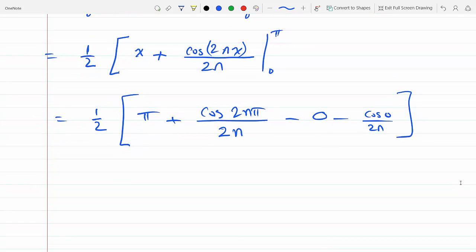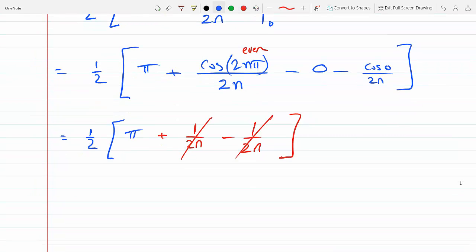And pi—this is pi plus cosine(2n pi) over 2n minus zero minus cosine(0) over 2n. So if I simplify here, I will get one-half pi. Now this is even here, and so this will get one. Cosine of an even multiple of pi is one, so this is 1 over 2n, and the last one is 1 over 2n, so these go away.